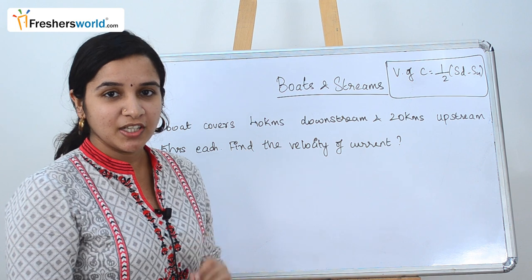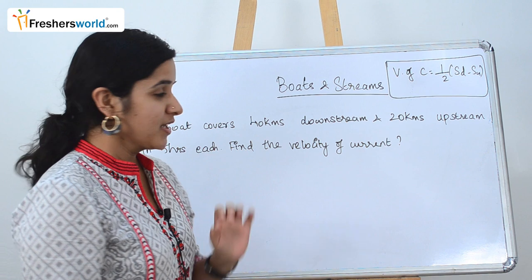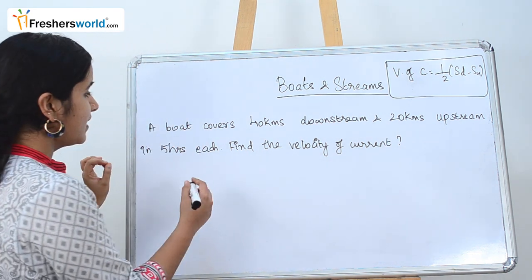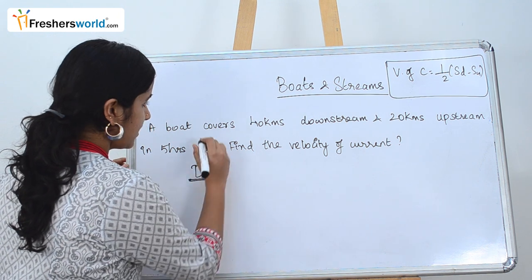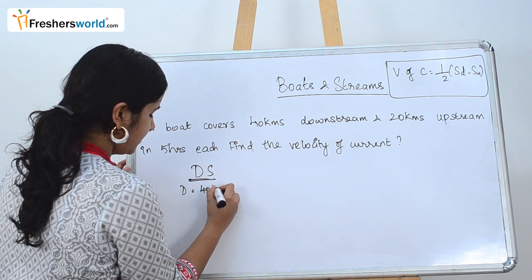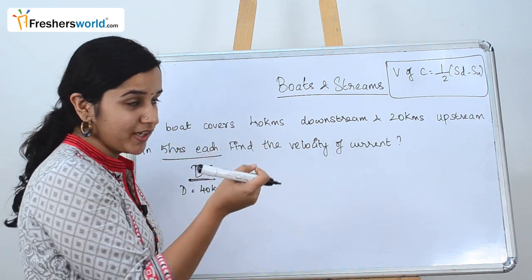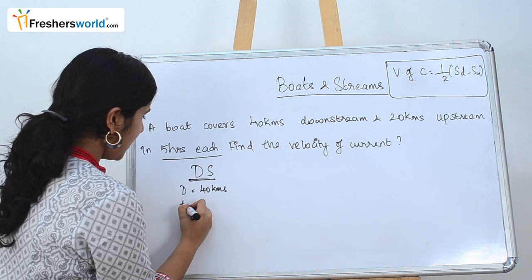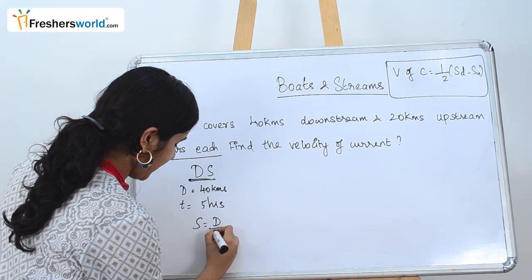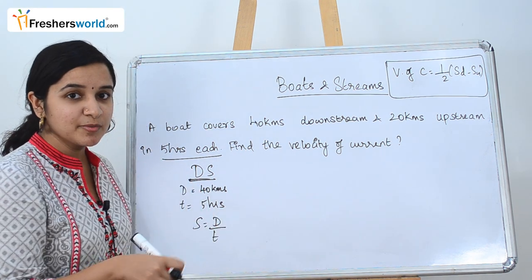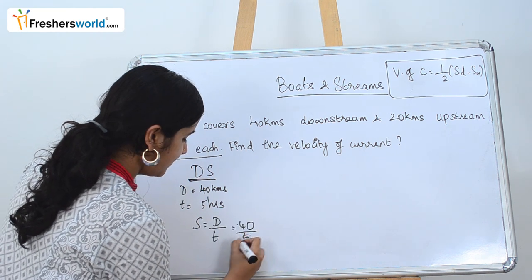Before solving, we know the velocity of the current formula is: half into (downstream speed minus upstream speed). They have given that the boat covers 40 kilometers downstream with a time of five hours each — downstream five hours, upstream five hours. We know the formula speed equals distance by time, so let's find the speed.